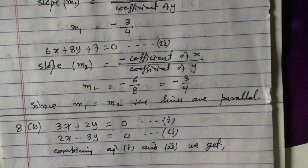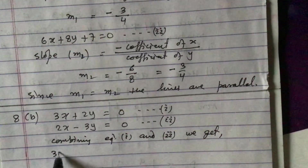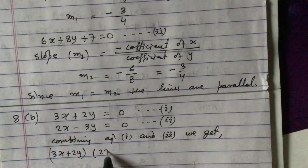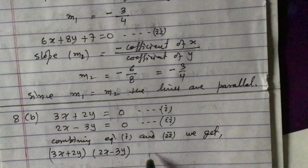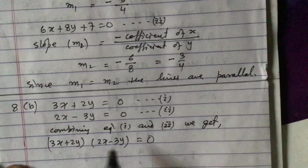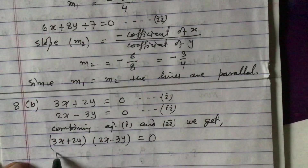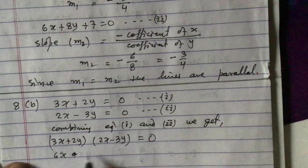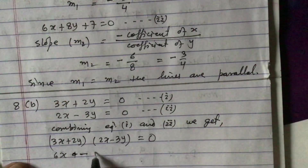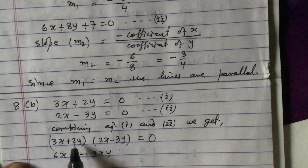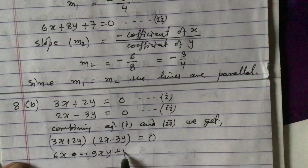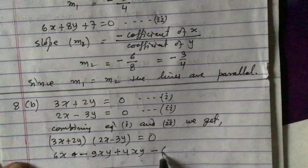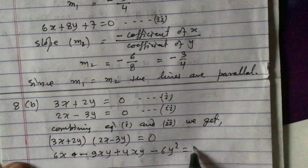Combining equation 1 and equation 2, we multiply: (3x plus 2y)(2x minus 3y) equals 0. Expanding: 3x times 2x gives 6x squared, 3x times minus 3y gives minus 9xy, 2y times 2x gives plus 4xy, and 2y times minus 3y gives minus 6y squared, all equals 0.